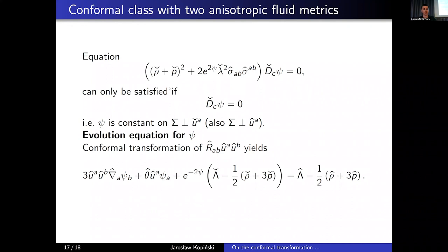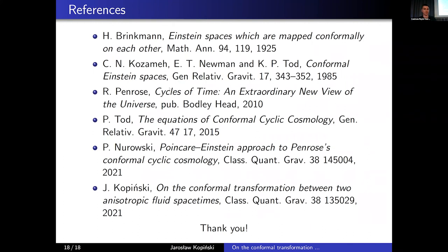In that case, the evolution equation for the conformal factor — which is a key problem in conformal cyclic cosmology — can be derived from the transformation rule for the projected part of the Ricci tensor, and is visible at the bottom of this slide. We see that it contains fluid quantities from both spacetimes: rho-hat, p-hat, rho-check, p-check, and the two cosmological constants lambda-hat and lambda-check. That was the main result of my paper. This talk was based on the following papers. Thank you for your attention.